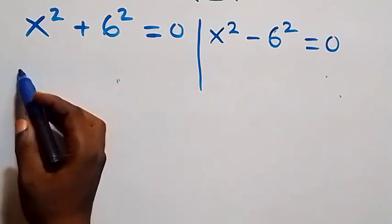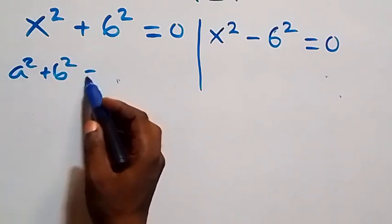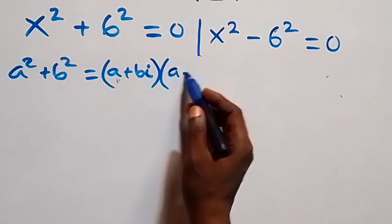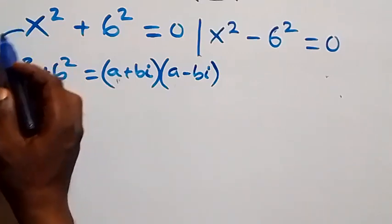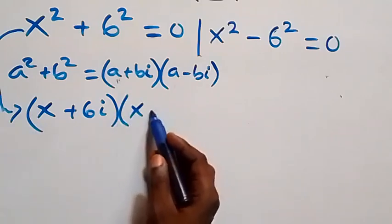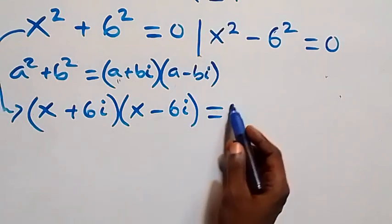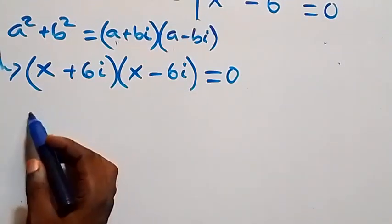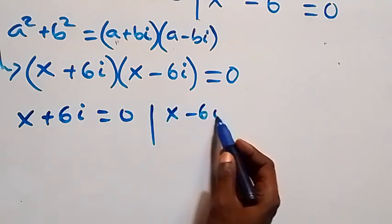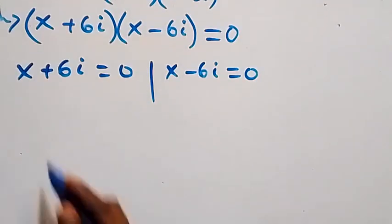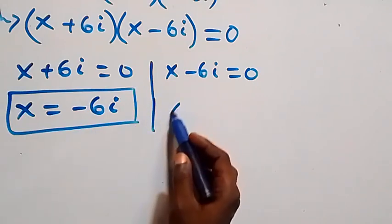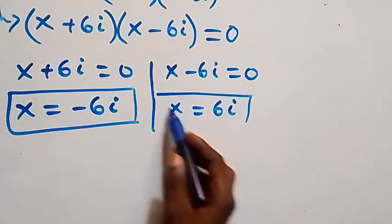Solving the first case: a squared plus b squared is the same as (a plus bi) times (a minus bi). Applying this, x squared plus 6 squared becomes (x plus 6i)(x minus 6i) equals 0. From here we get two cases: x plus 6i equals 0 giving x equals minus 6i, and x minus 6i equals 0 giving x equals 6i. These are the two complex solutions.